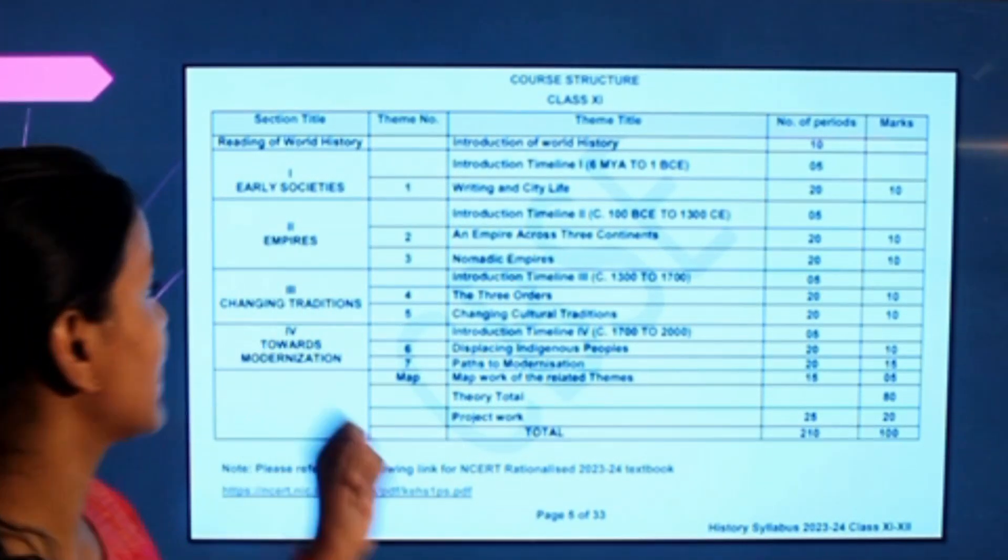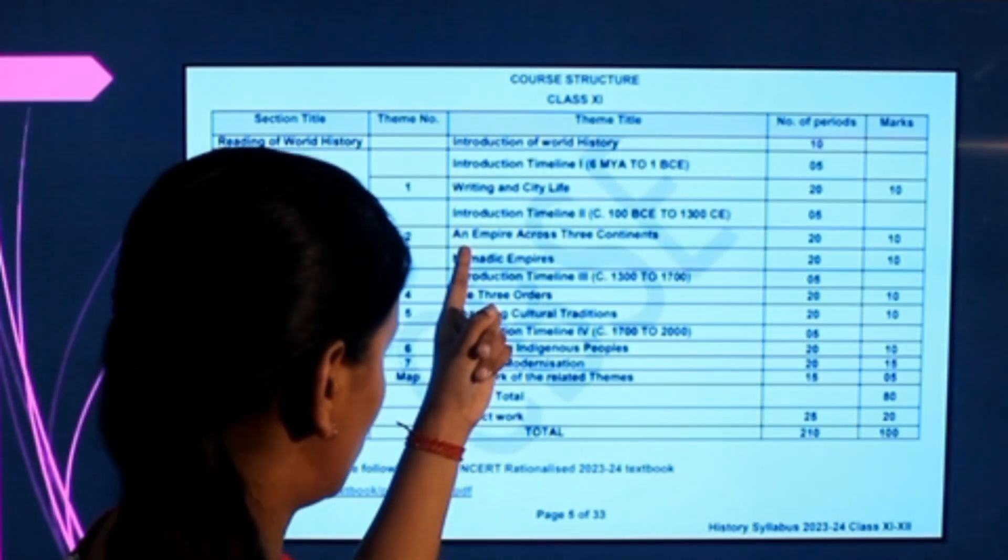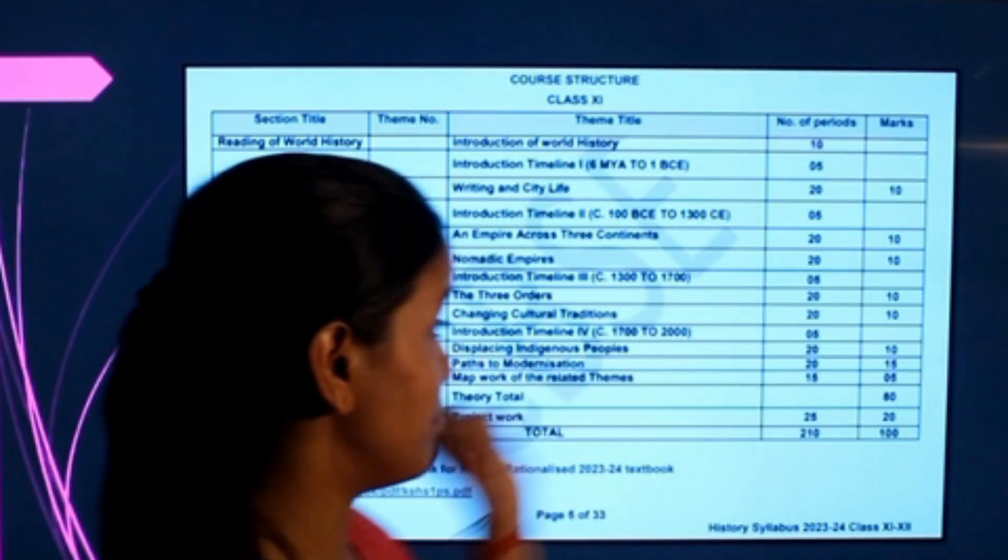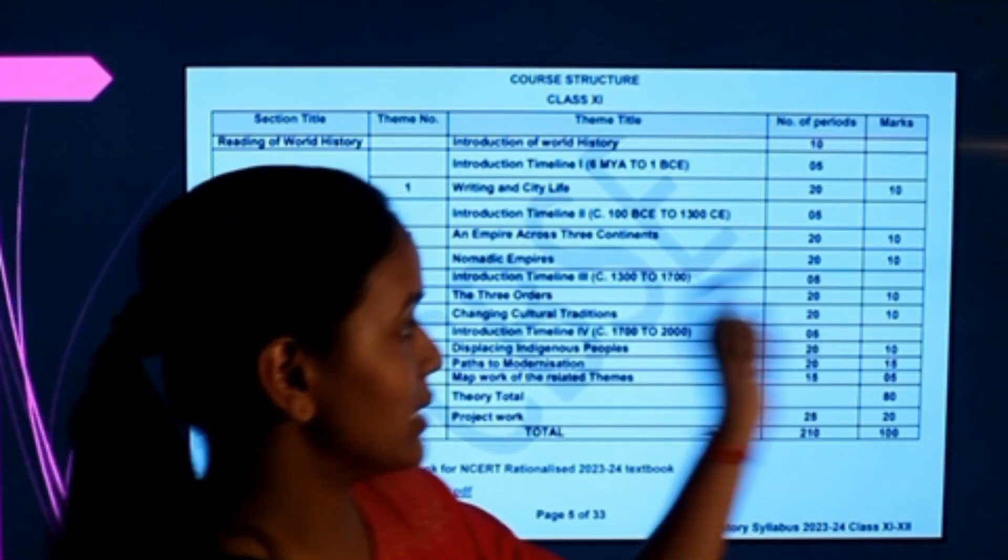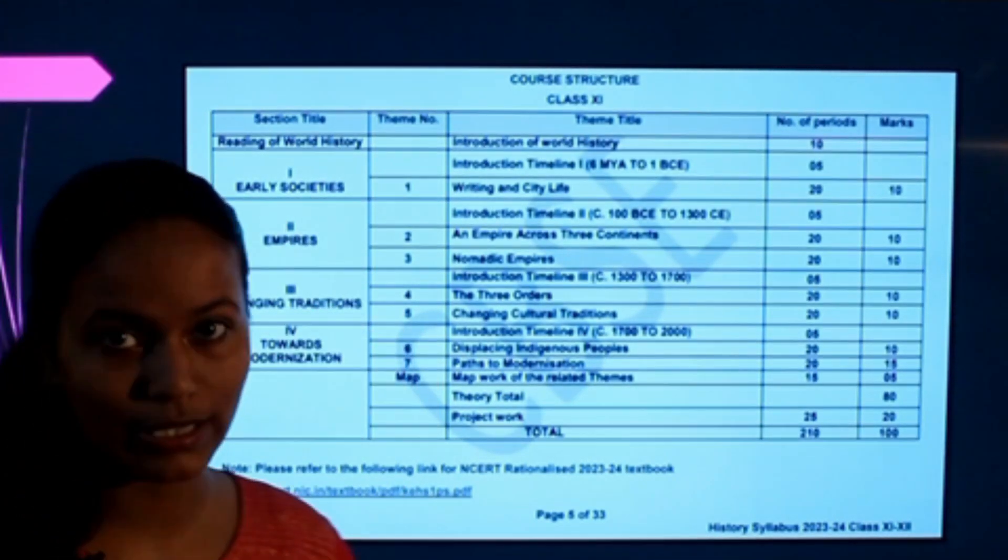Empires. The second part is Empires and there are two chapters coming there. That is Empire Across Three Continents, 10 marks, and Nomadic Empires, 10 marks. Now I am going to discuss the first video on Writing and City Life.